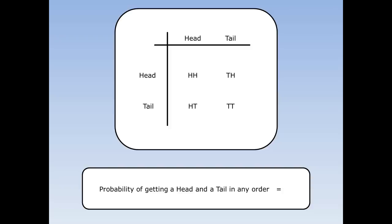What's the probability of getting a head and a tail in any order? Well, there are two places this happens. I could get a head then a tail, or a tail then a head, and there are four things that could happen altogether. So the chance of getting a head and a tail in any order is two out of four.